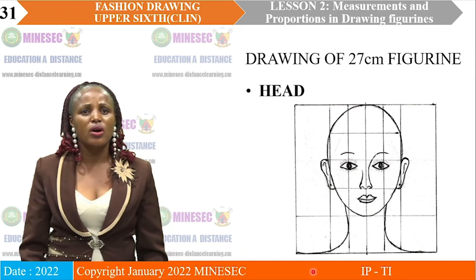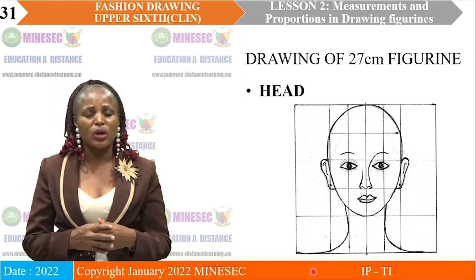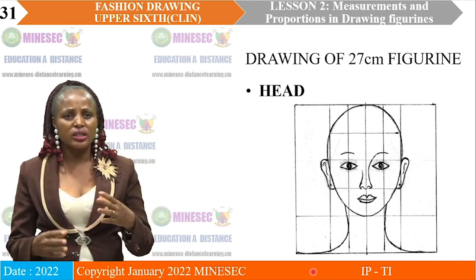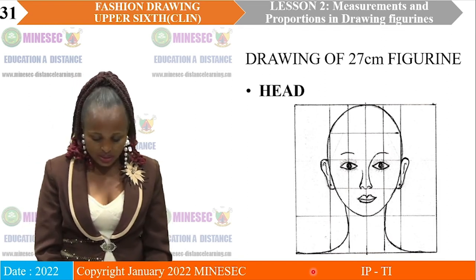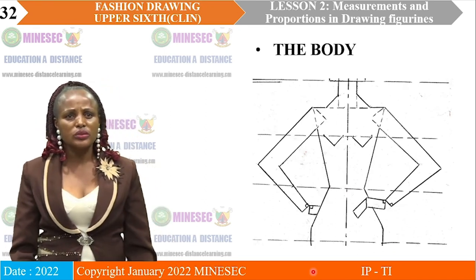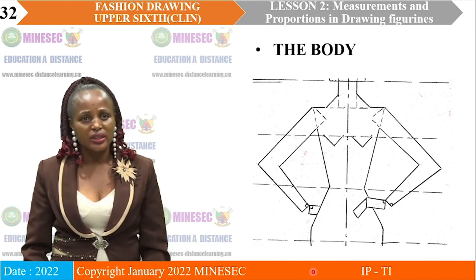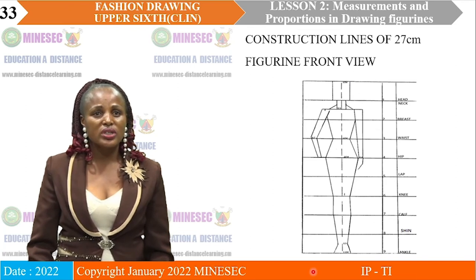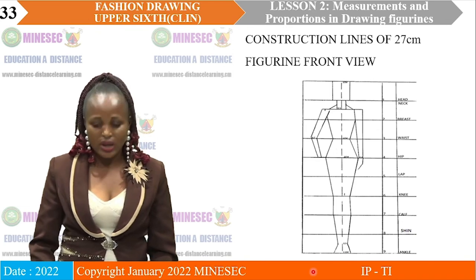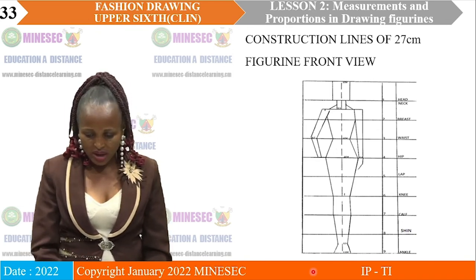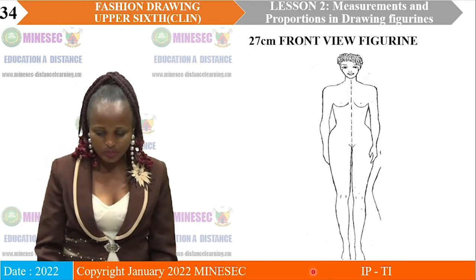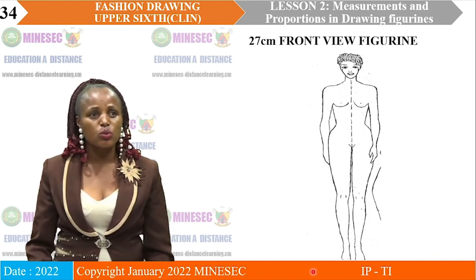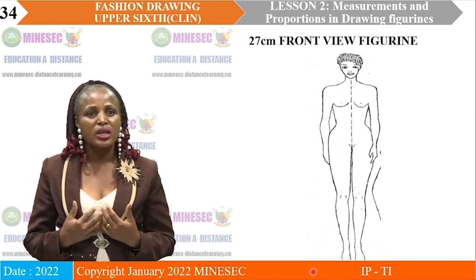We are going to look at the drawing of the front view head figurine. You can see the full eyes, the full ears, the nose, the mouth, and the chin — that is our front view head figurine. We also have the body of the front view — this is how the body of the front view figurine looks like, with the construction lines. We have the construction line of the 27-centimeter figurine, front view in full: the head, the neck, the breast line, the waist line, the hip, the laps, and the knee. The shaped front view figurine shows the breasts and all the body parts.